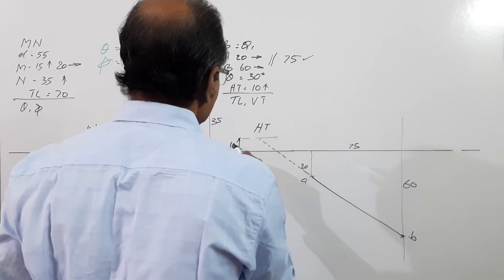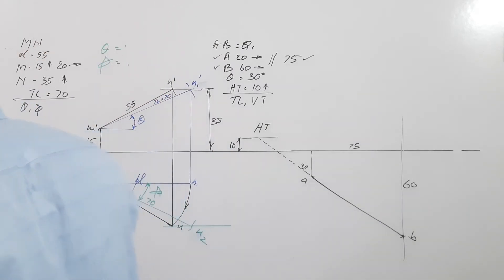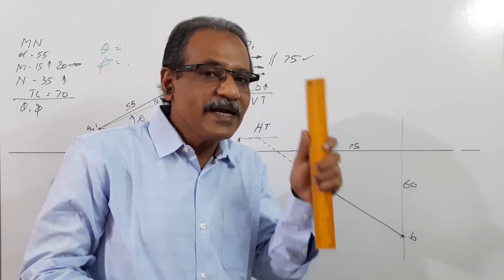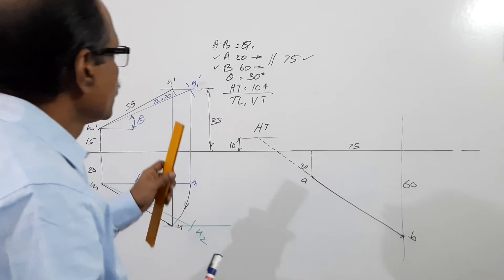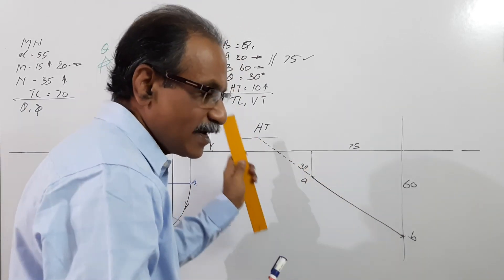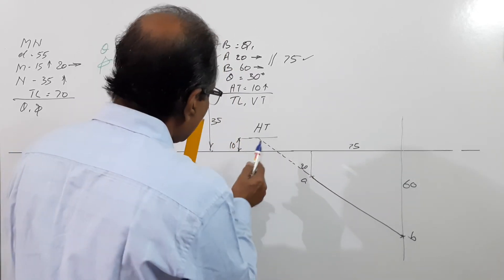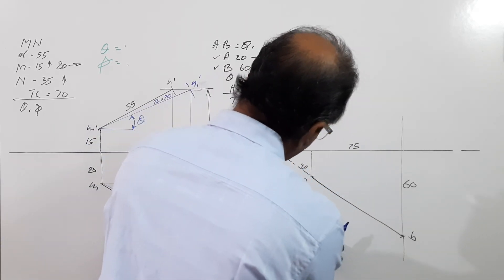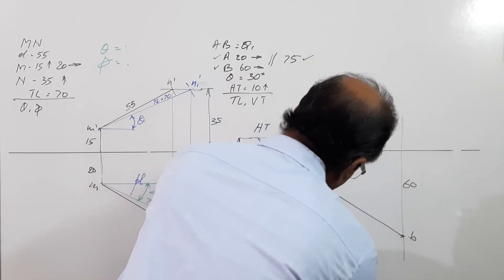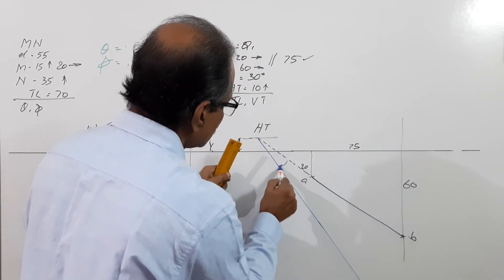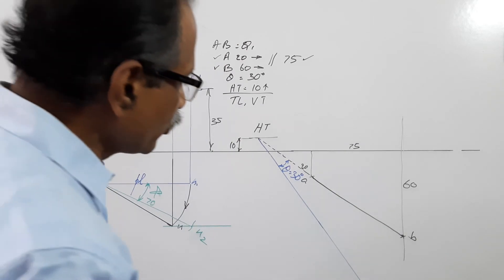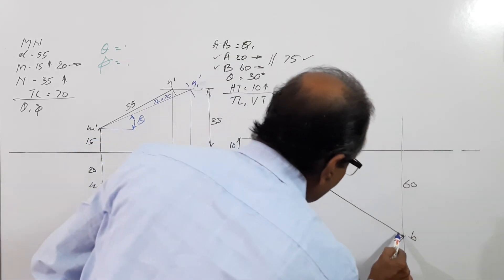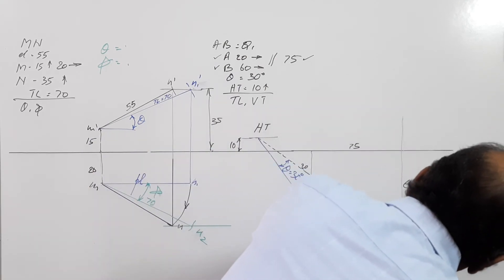This is HT. By trapezoidal construction, at the point HT the angle between the plan and the true length is theta. The value of theta is given as 30 degrees, so at HT draw a line at theta equals 30 degrees.